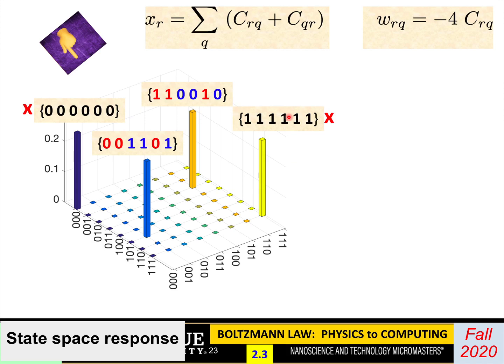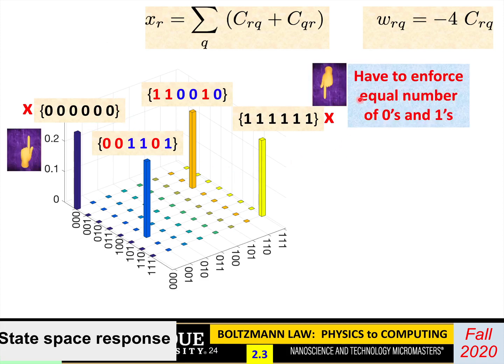But of course, it's not the solution we want because the original problem said, take your six nodes and break it up into two equal groups. Put three in one and three in the other. So here you have taken all six and put them in one group. So that's not what you're looking for. That is where we have to put in a constraint into the problem. We have to figure out a way so that whenever the number of 1s is not equal to the number of 0s, there is a large energy cost to it.